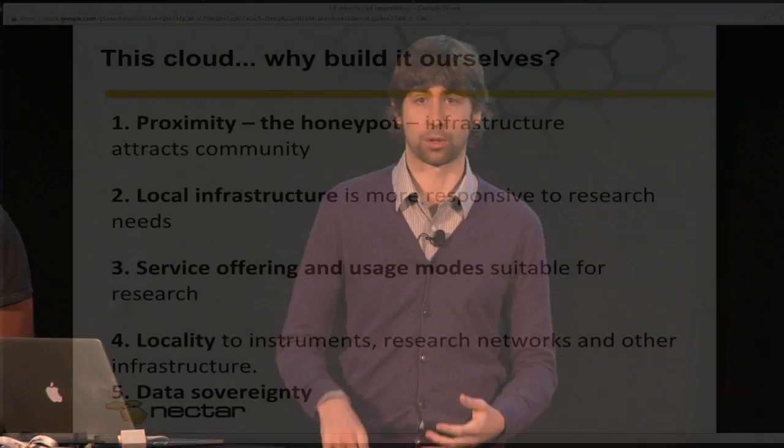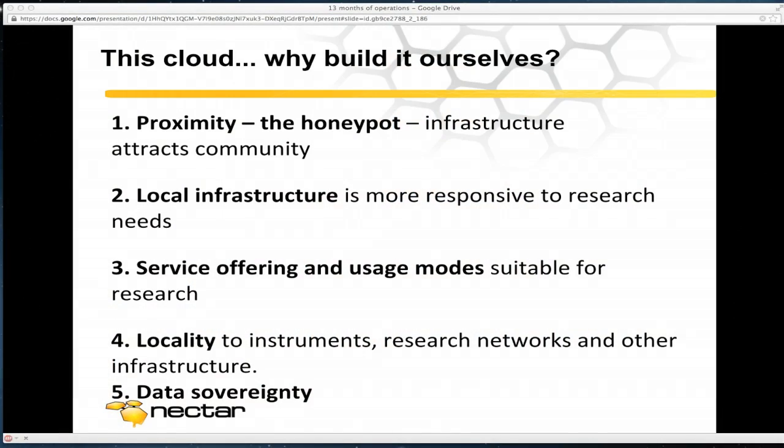We have a ton of existing infrastructure — data centers, data storage, scientific instruments around the country — and having a cloud in the same data centers as those, or access to the very high performance network, is critical. And then just to round it off: data sovereignty. We've got particular data, particularly medical data, which if it even crosses state boundaries we get in trouble.